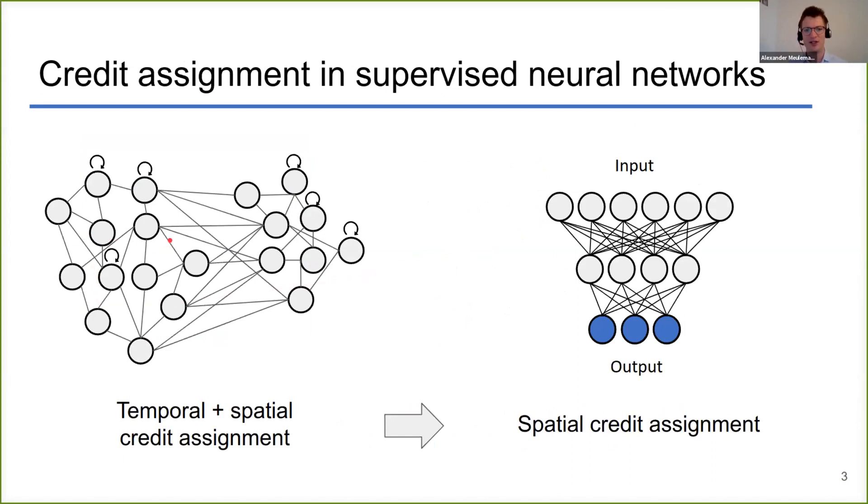You have two aspects of this credit assignment problem. On one side, the spatial credit assignment problem, because different subpopulations of neurons work together to create an output, so you need to assign credit over space. But you also have the temporal credit assignment problem because most networks are recurrent, so computations are extended over time.